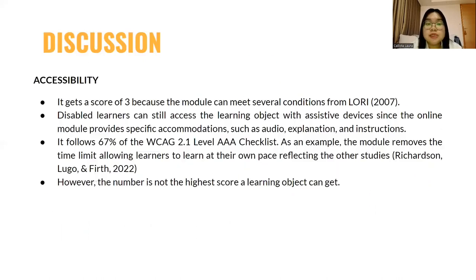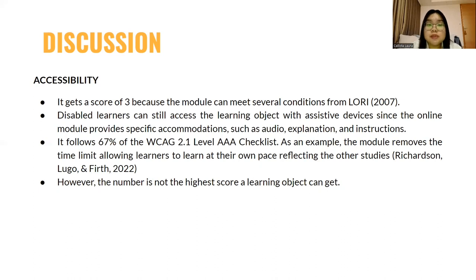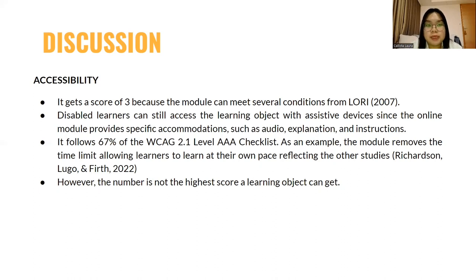The last moderate point is accessibility. It gets a score of 3 because the module meets several LORI conditions — disabled learners can still access the learning object because specific accommodations are provided. It also follows 67% of the WCAG 2.1 level AAA checklist. However, that number is not enough for a learning object.